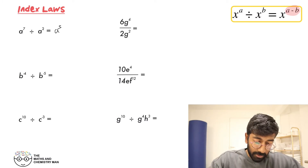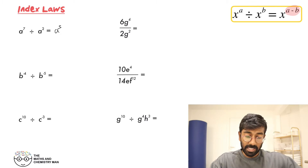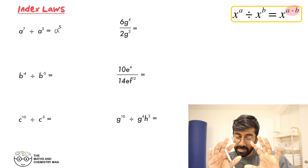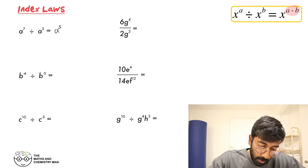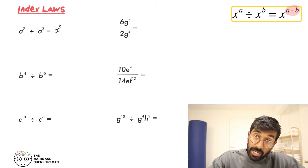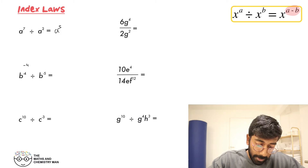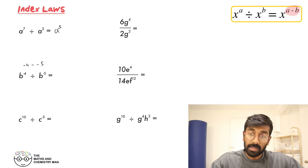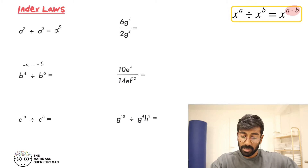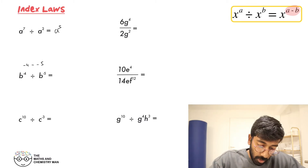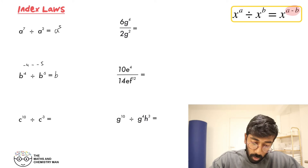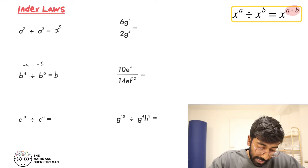Next, B to the power of minus 4 divided by B to the power of minus 5. You need to be a little bit careful here, because we need to take away our powers — that means we're doing minus 4 minus minus 5, which gives us minus 4 plus 5. So this is just B to the power of 1, or just B.